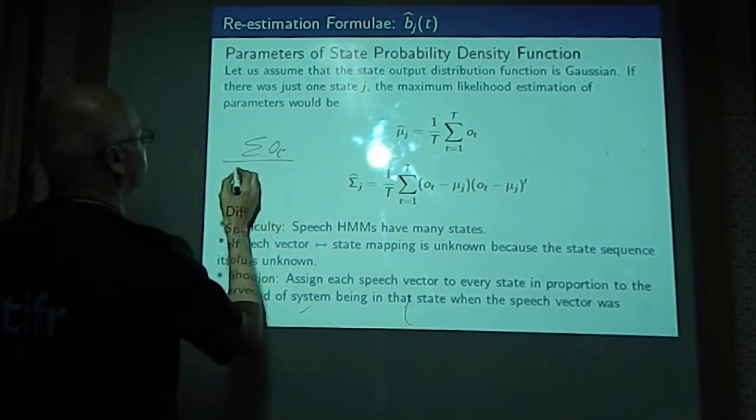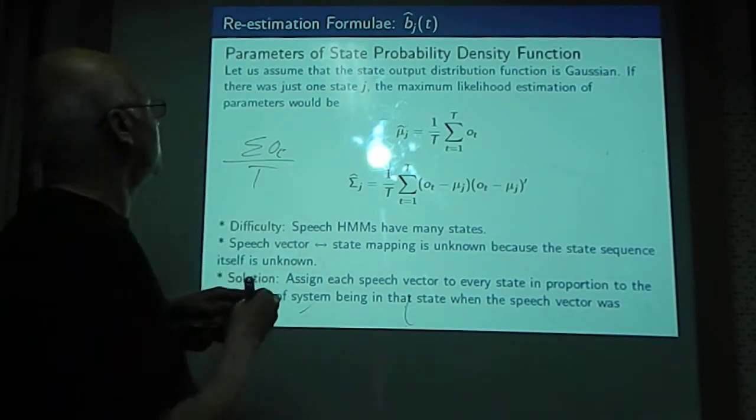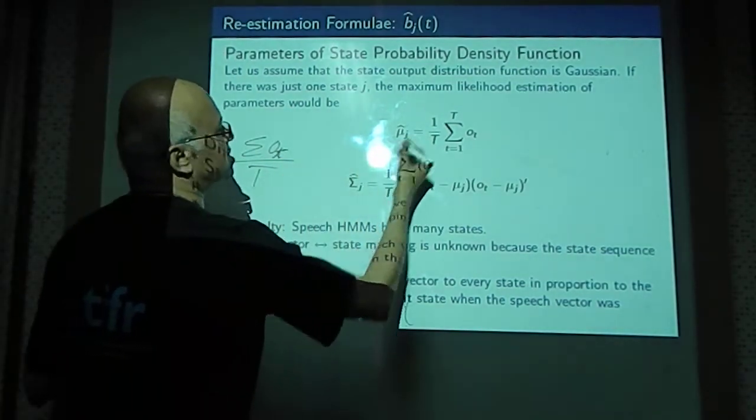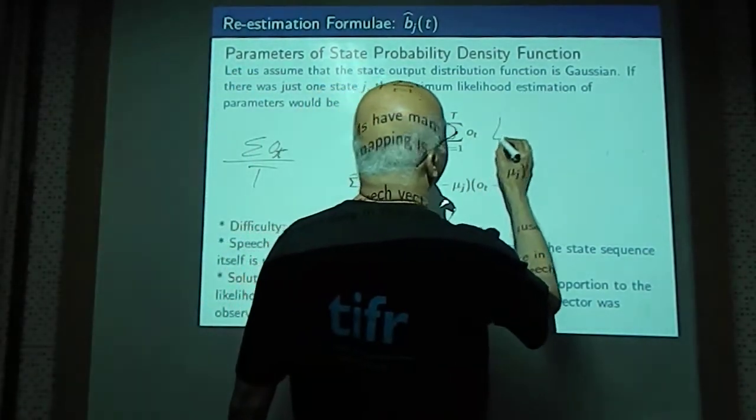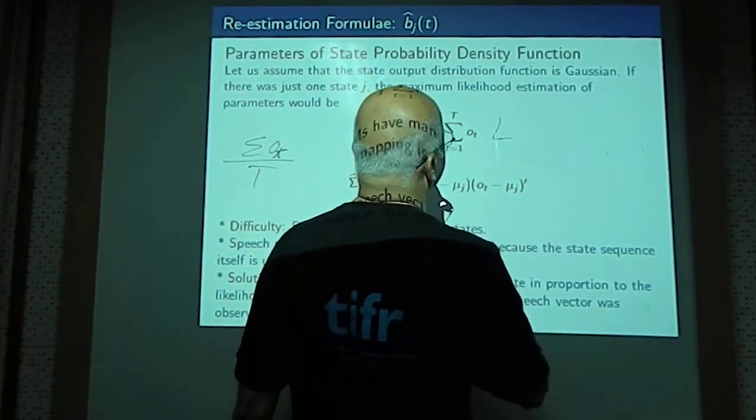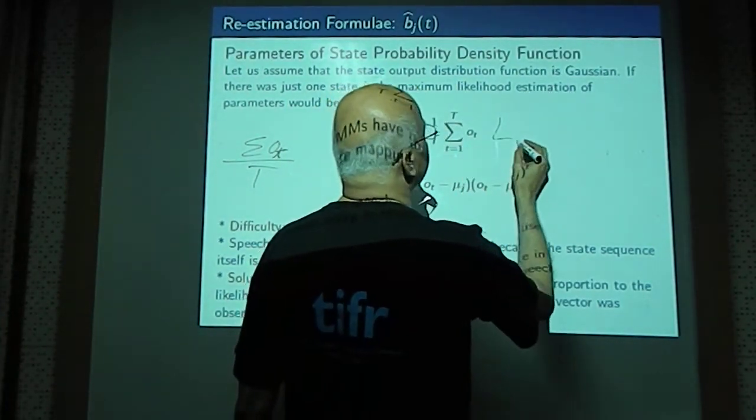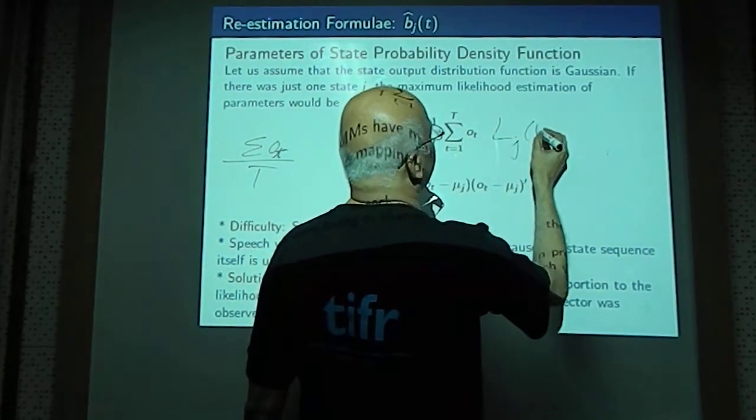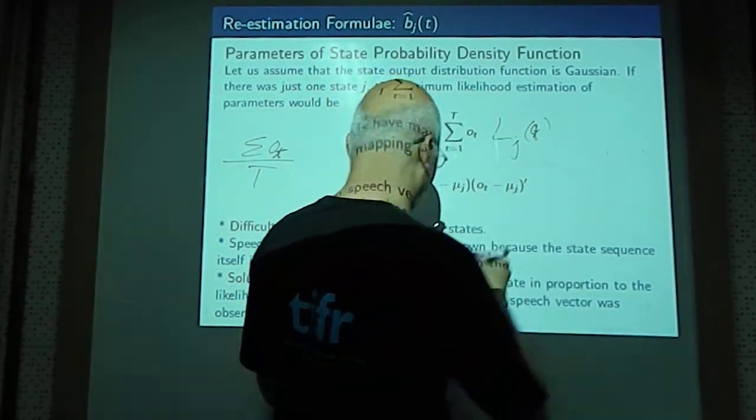So that could be capital T. But we know that not all feature vectors are assigned to one state but only a part of it. Therefore, instead of taking a weighted sum and dividing by n, instead of taking a simple average, we take a weighted average where the weight is given by L_j of t.